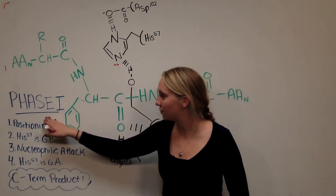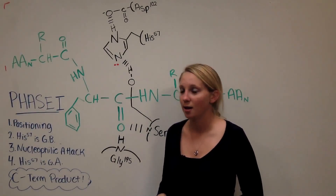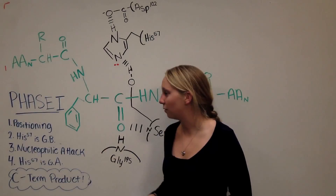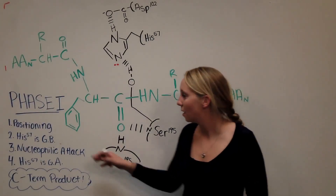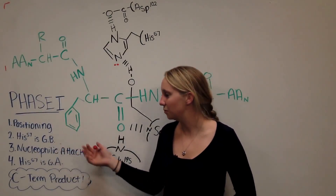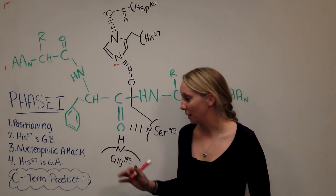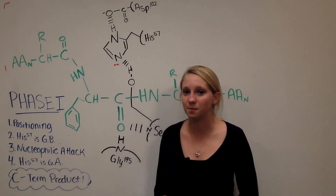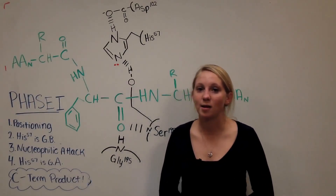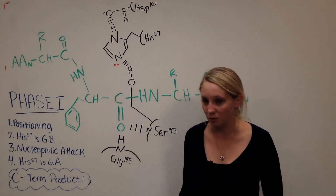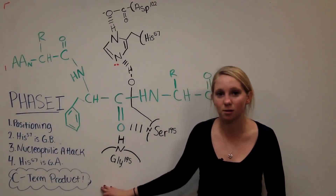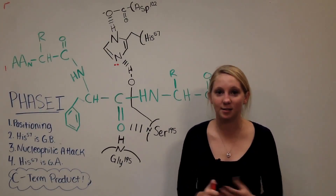Over here the phase is labeled so you can follow along while reviewing. I've also outlined the general flow for each phase: starting with a positioning step, then histidine acting as a general base to deprotonate something, then that species nucleophilically attacking another, then histidine-57 acting as a general acid to protonate a species that becomes the leaving group so a product can be formed. In phase one, it's going to be the C-terminal product. Let's get into the mechanism.